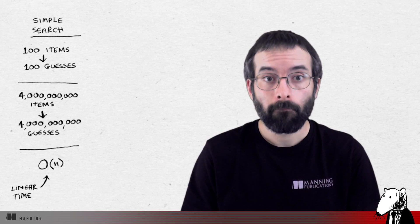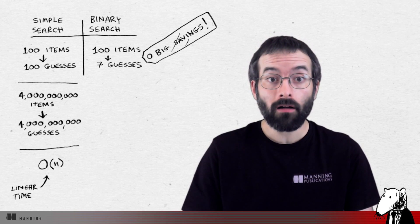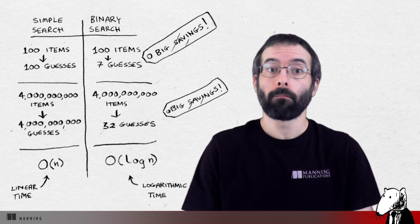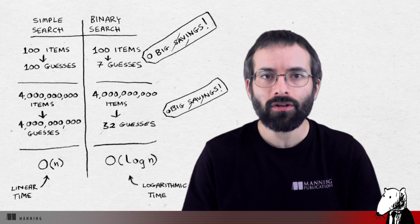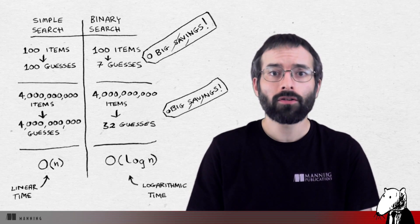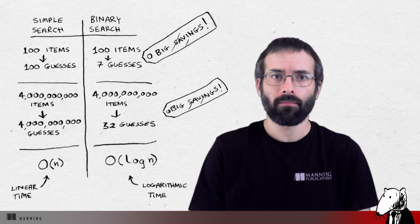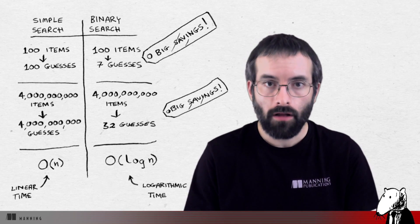Binary search is different. If the list is 100 items long, it takes at most seven guesses. If the list is 4 billion items, it takes at most 32 guesses. So it's pretty powerful. Binary search runs in logarithmic time, or as it's usually called log time.